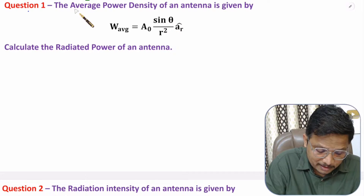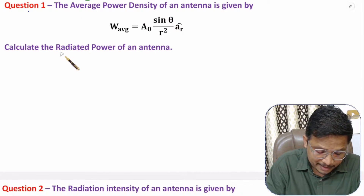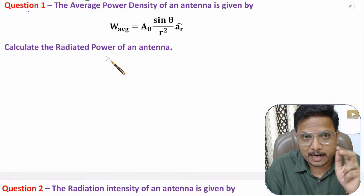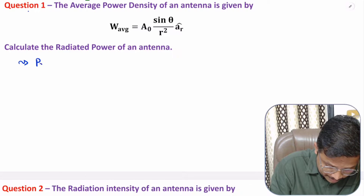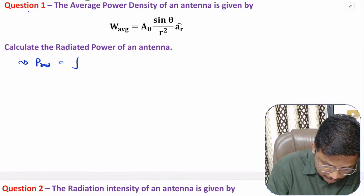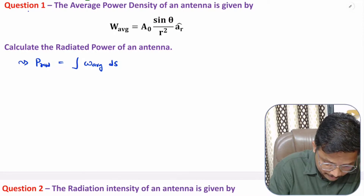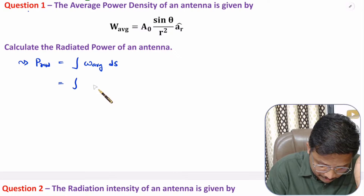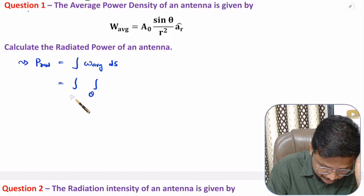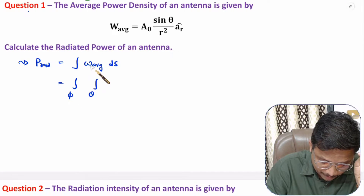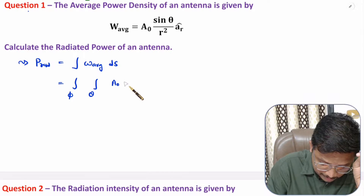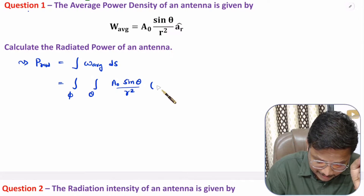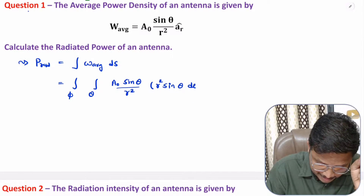In question one we are given with average power density and we need to identify radiated power. Radiated power is the surface integration of average power density. With this surface integration we have two components, theta and phi, so a double integration will be there — first with respect to theta and second with respect to phi — where the average power density given is a₀·sinθ divided by r², and the surface element is r²·sinθ·dθ·dφ.